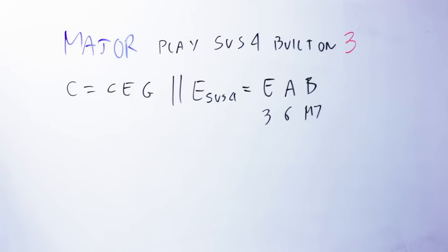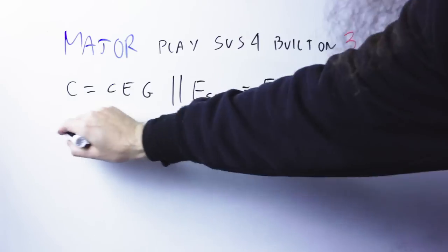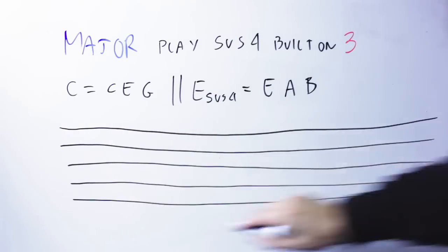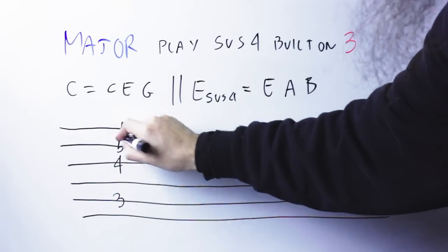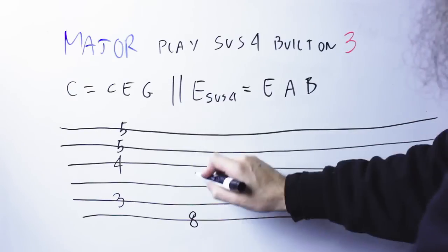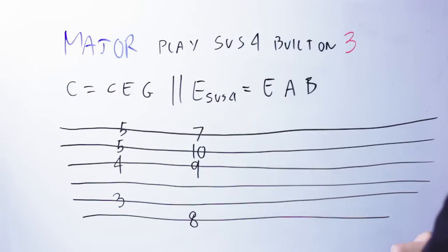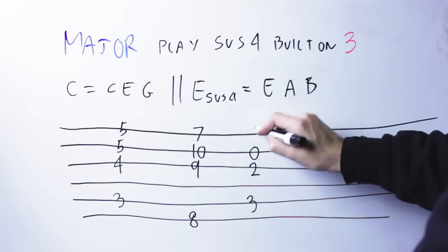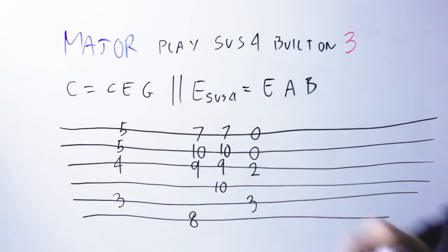So, for the overly fond of names people among you, this is a major seventh slash sixth chord. But, again, who cares about names? Let's see how it sounds. Using the three shapes for the sus-four chord on the first three strings, and playing the C note at the base, I end up with those playable shapes for this substitution.